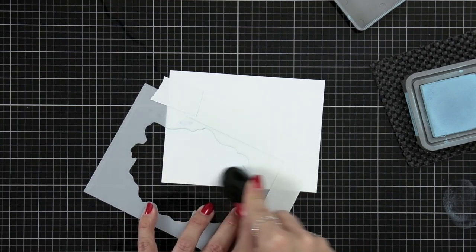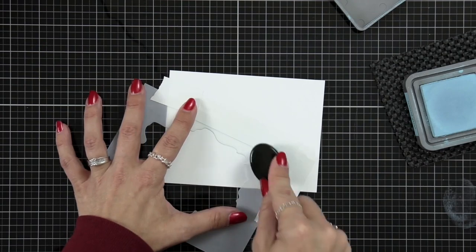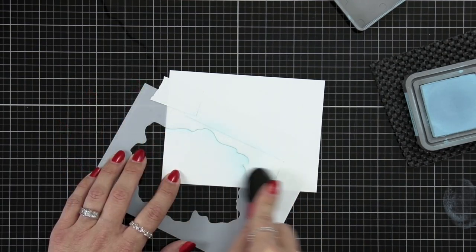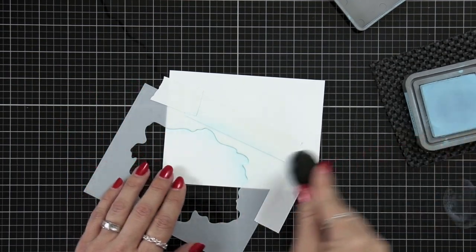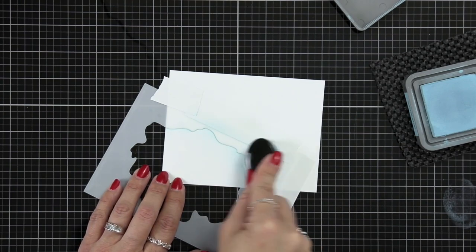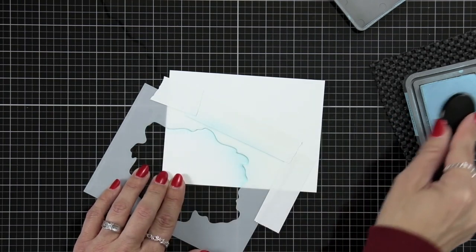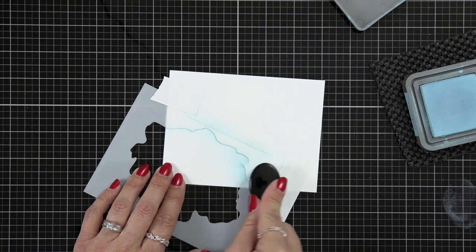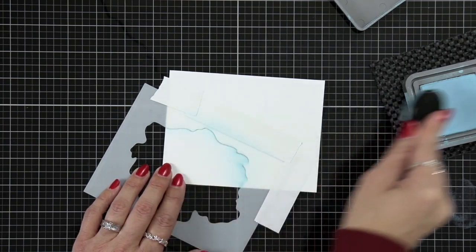I don't want to cover the whole thing I just kind of want to blend it into the center and have it fade off. Now this is really fun. Take your blending brush and kind of flick it from the edge. This gives it such a neat look that really works with that little body of water.